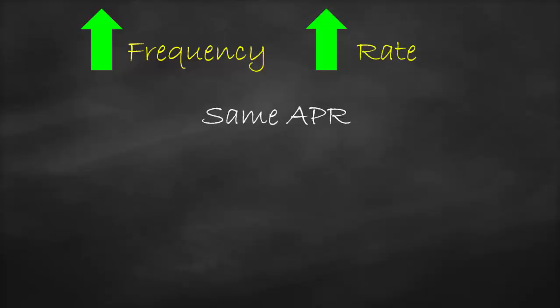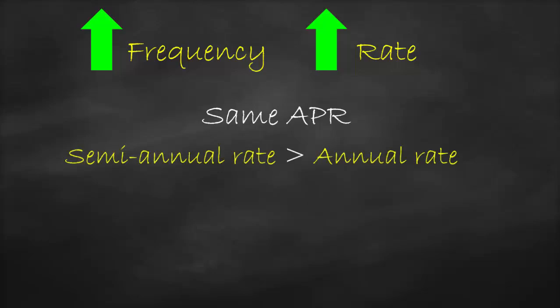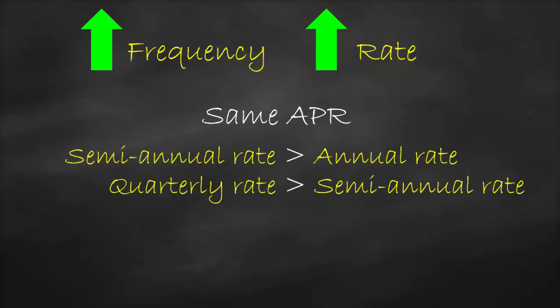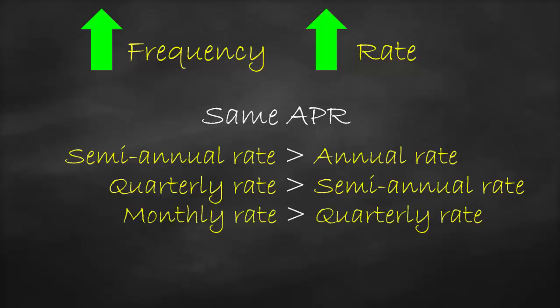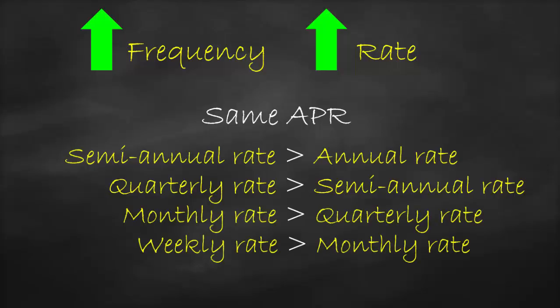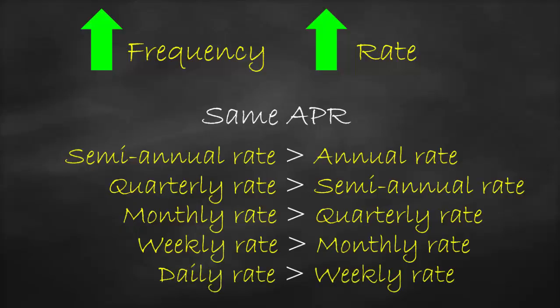Given the same annual percentage rate: semi-annual rate is bigger than annual rate; quarterly rate is bigger than semi-annual; monthly rate is bigger than quarterly; weekly rate is bigger than monthly; and daily rate is bigger than weekly.